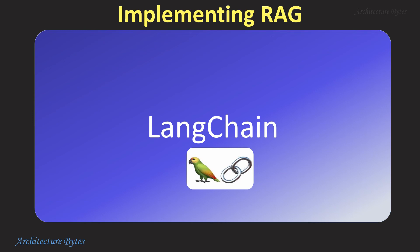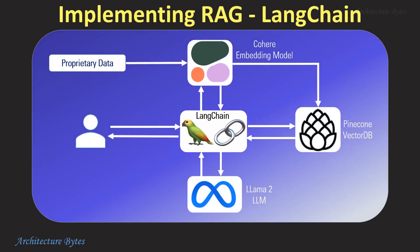LangChain is available as both Python and JavaScript libraries. It essentially acts like an orchestrator, allowing AI developers to combine LLMs with external sources of data and computation. In this diagram, you can see how LangChain interacts with various entities. Remember that LangChain can do more — for example, use agents to initiate actions.